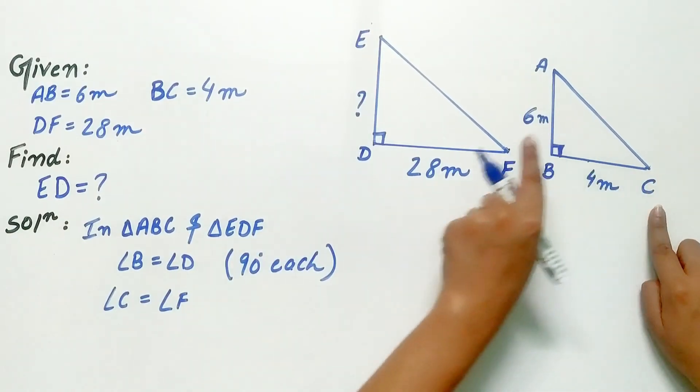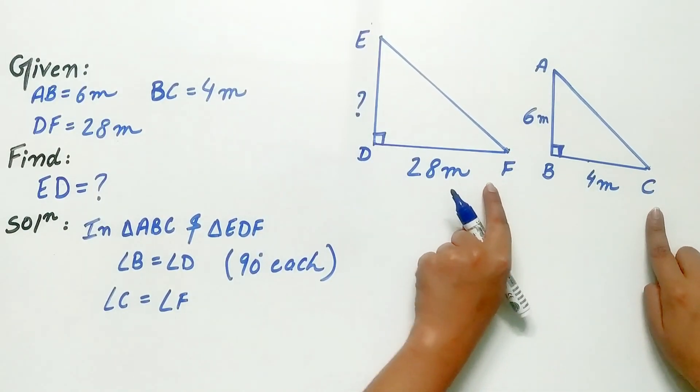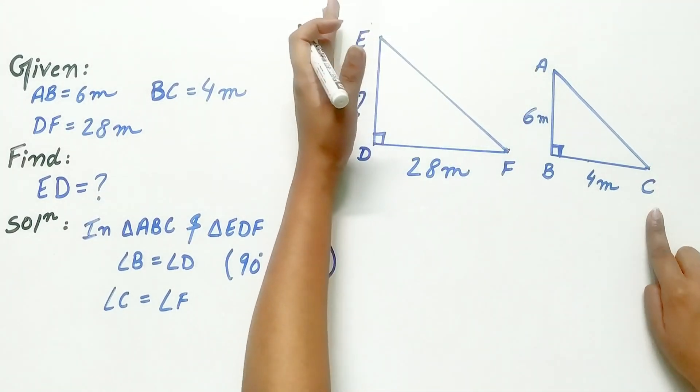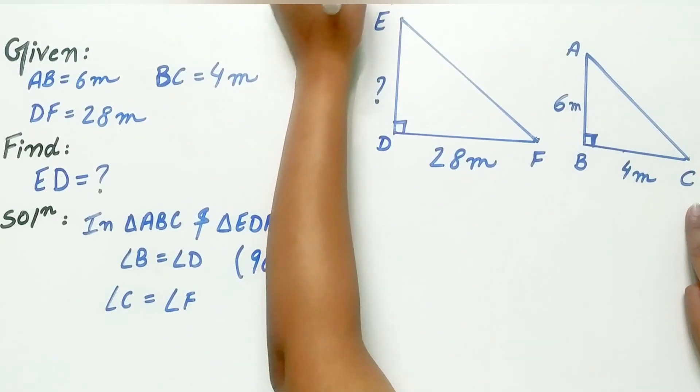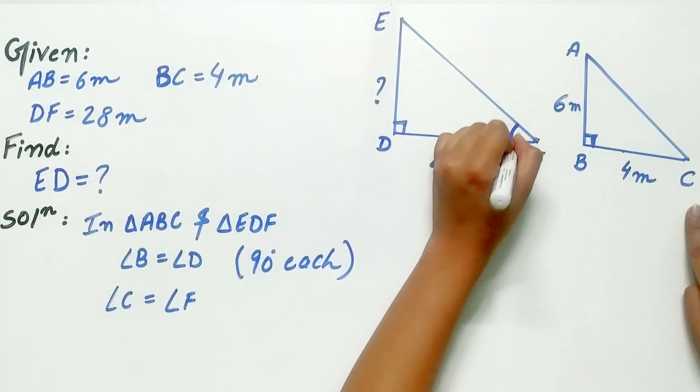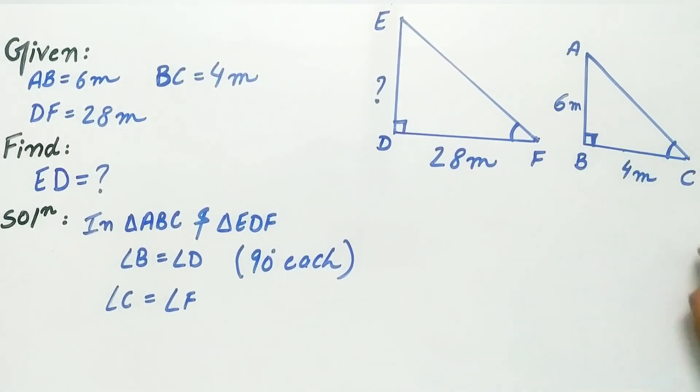Angle C is equal to angle F because the shadow of both the towers is cast at the same time. Hence, the angle of elevation are equal.